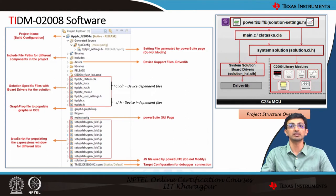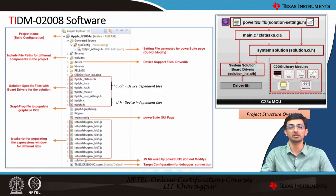The CC XML file is the target configuration file for debugger connection, used to connect your computer with the actual launchpad or control card. On the right is a generic view of the structure: you start with the power suite page — the solution underscore settings dot H file — then have the main dot C or CLA task dot CLA based on whether you run on C28x or CLA. Then there are solution-specific files, hardware abstraction layer device-dependent files, and at the bottom the driver lib inside the device folder. Additionally, C2000 library modules such as SFRA and compensator designer are available with the design.